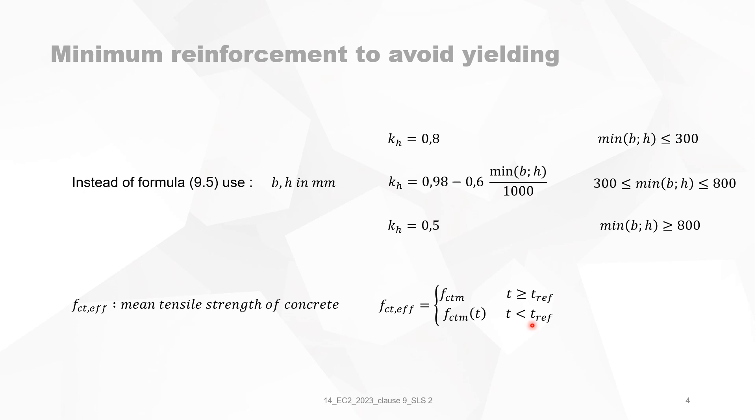And then it says that f_ct,effective, it's also the tensile stress of the concrete in function of time when T is smaller than 28 days. Now, you can take it at seven days or 14 days or 12 days. So what kind of minimum reinforcement do we need now? And why is the minimum reinforcement needed for f_ctm at the time of seven days? So it's something that I've never used in practice, this line. I always use f_ctm at T_reference equals to 28 days.